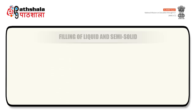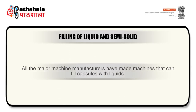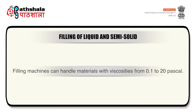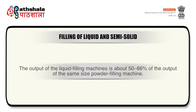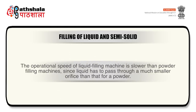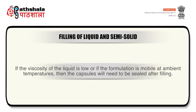Now we will discuss filling of liquids and semi-solids. All major machine manufacturers have made machines that can fill capsules with liquids. Filling machines can handle materials with viscosities from 0.1 to 20 Pascal. The uniformity of liquid fill is generally better than that achieved on a powder filling machine. The output of liquid filling machines is about 50 to 66% of the output of the same-size powder filling machine, as liquid must pass through a much smaller orifice. If the viscosity of the liquid is low or if the formulation is mobile at ambient temperatures, the capsule will need to be sealed after filling.